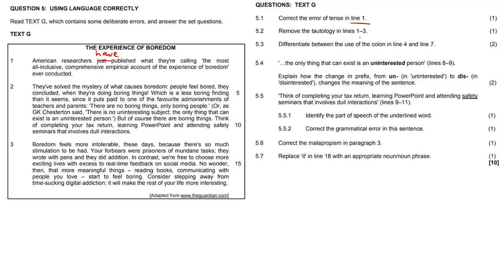5.2, there's a tautology in lines one to three. If you look very carefully, all-inclusive and comprehensive is the same thing, so we remove one of them.